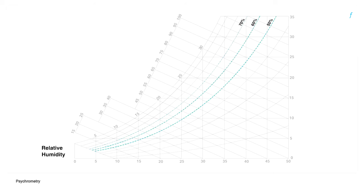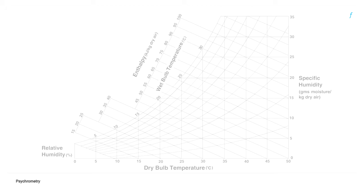Moving towards the right or left on the chart parallel to the x-axis would be sensible heating or sensible cooling where the dry bulb temperature changes without a change in the moisture content of air. Moving parallel to the y-axis would cause humidification or dehumidification, changes in humidity levels of air without changing the dry bulb temperature.